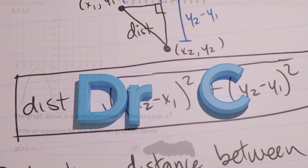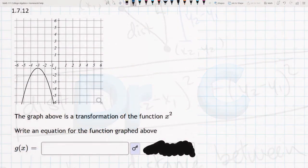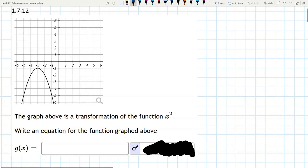In this problem, we have a graph and we're going to write down the function that created this graph. They gave us the base function x squared, so if we write all the transformations forms, it'll look like A times f of a(x - h) + k.